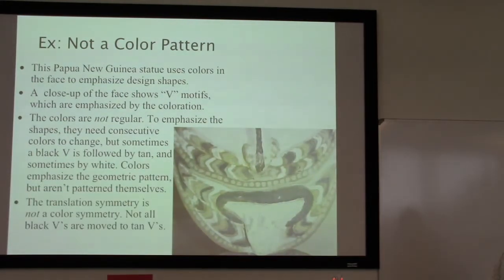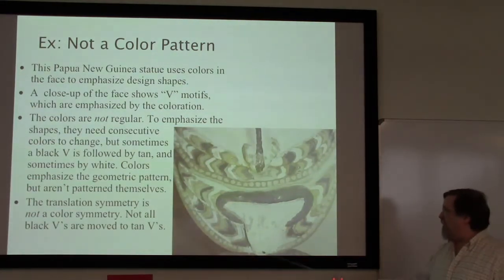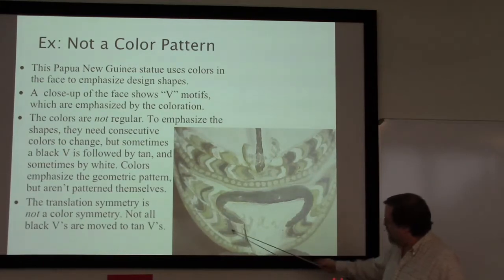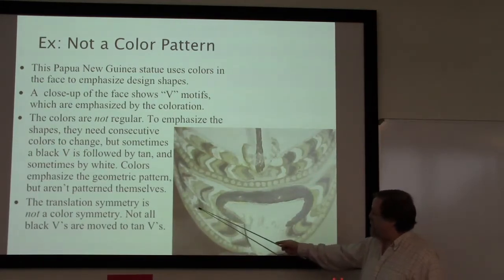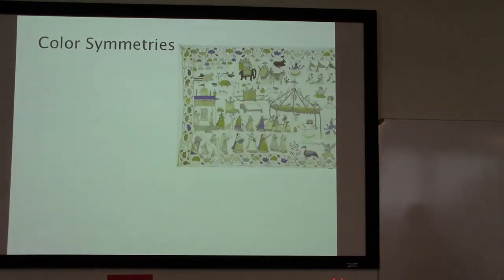This translation along here is not a color symmetry. Some of the black v's are moved: if I move in this direction, this one goes to tan but this one does not — it goes to a white shape. Let's look at another example that helps to clarify this idea.